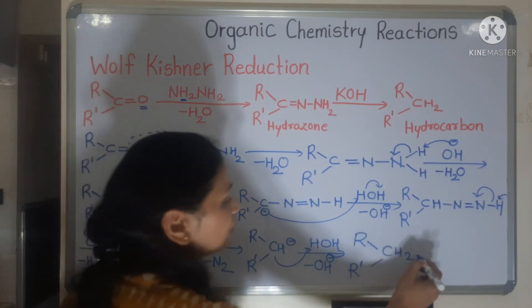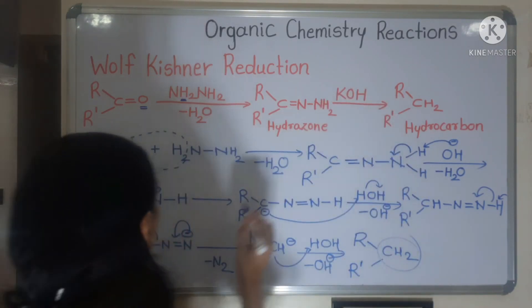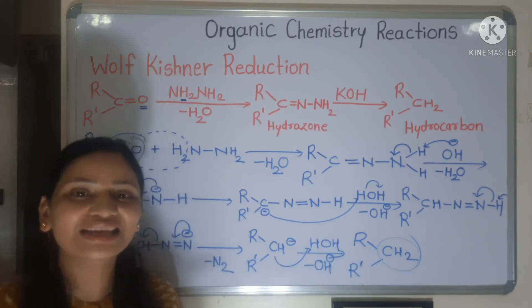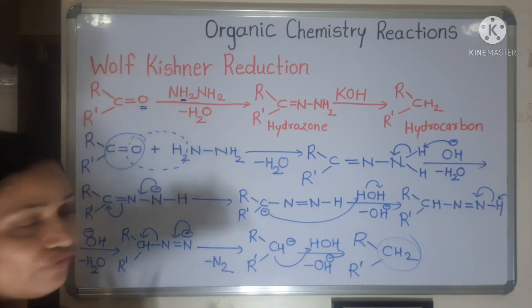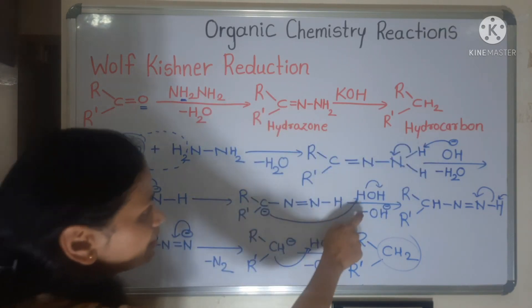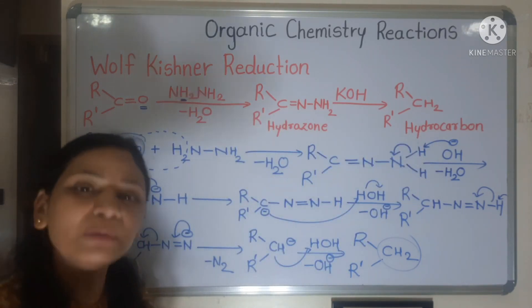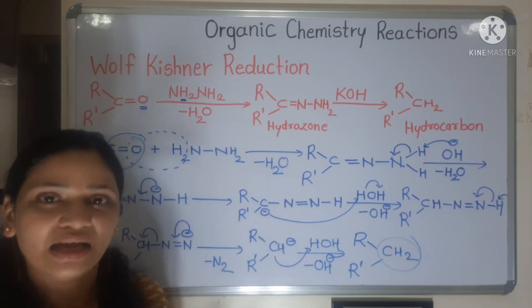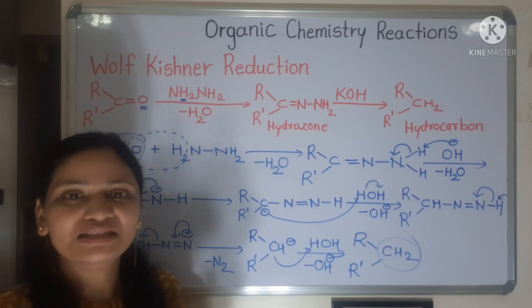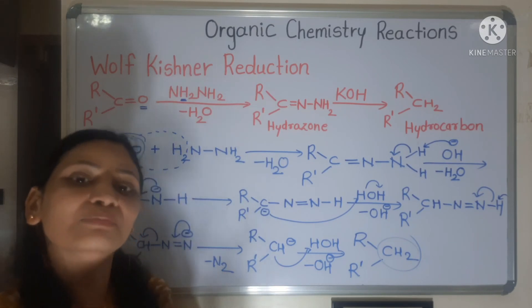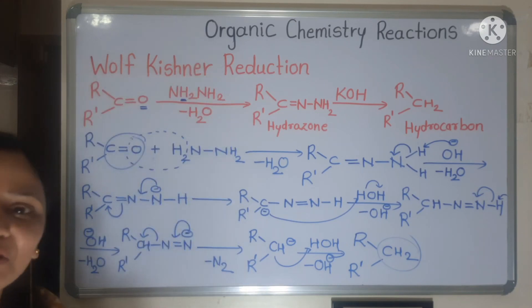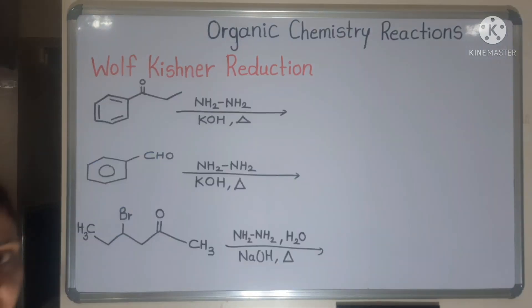The mechanism has 4-5 steps, but steps 1, 2, and 3 are repeated twice — that's why it looks long. Once: remove a hydrogen, convert to carbanion, add water. Repeat the same steps. That is all about the Wolf-Kishner reduction mechanism.